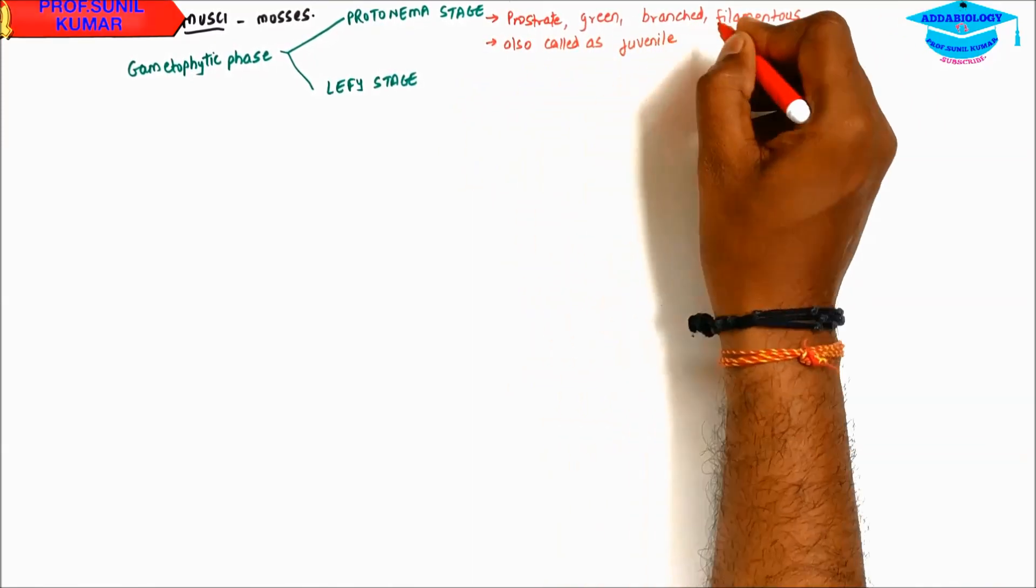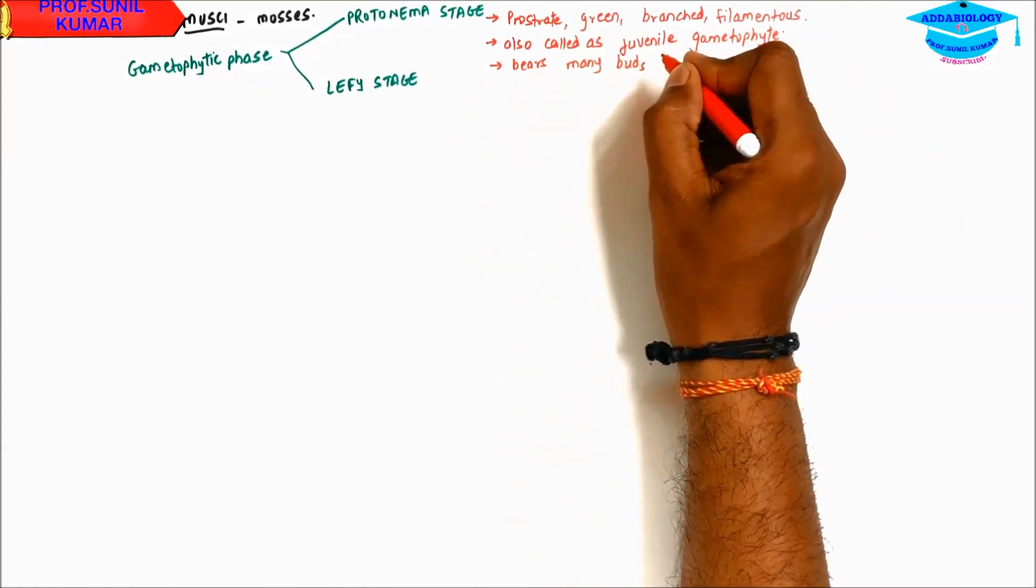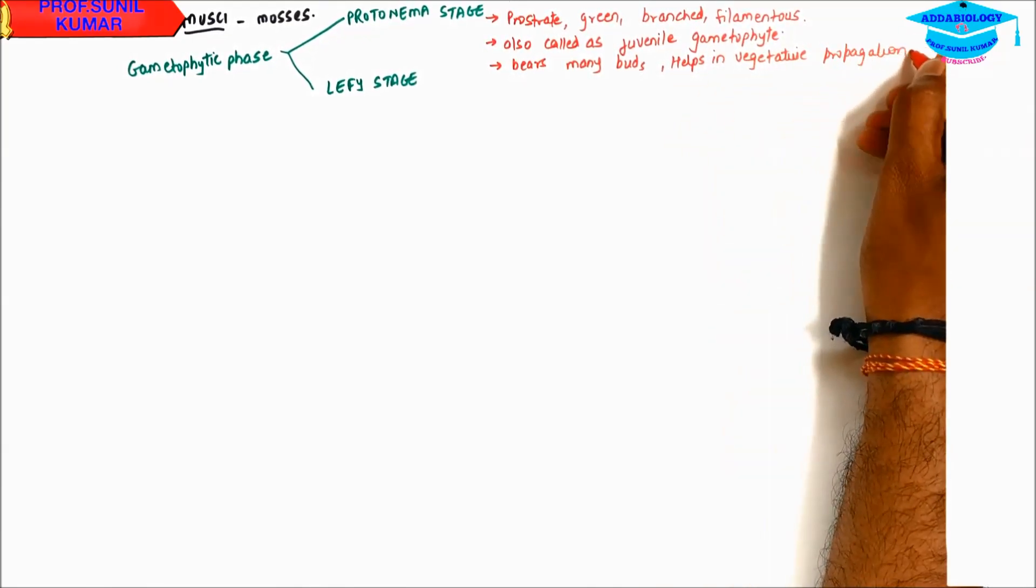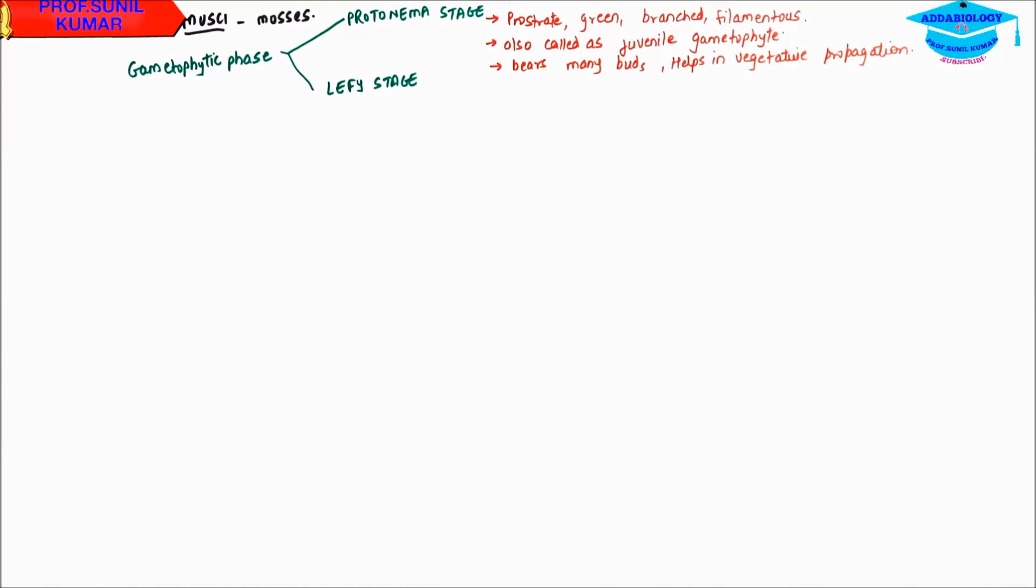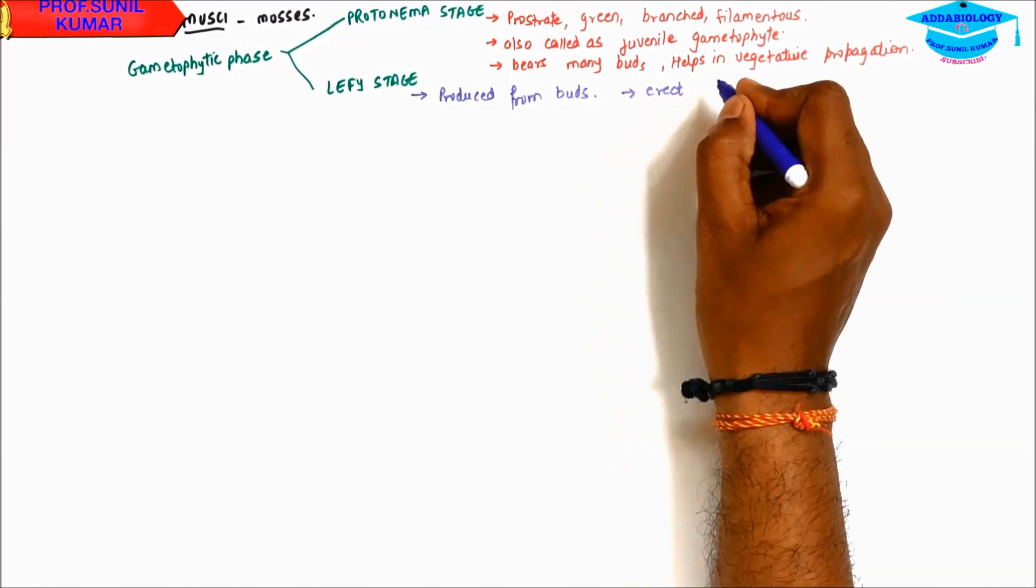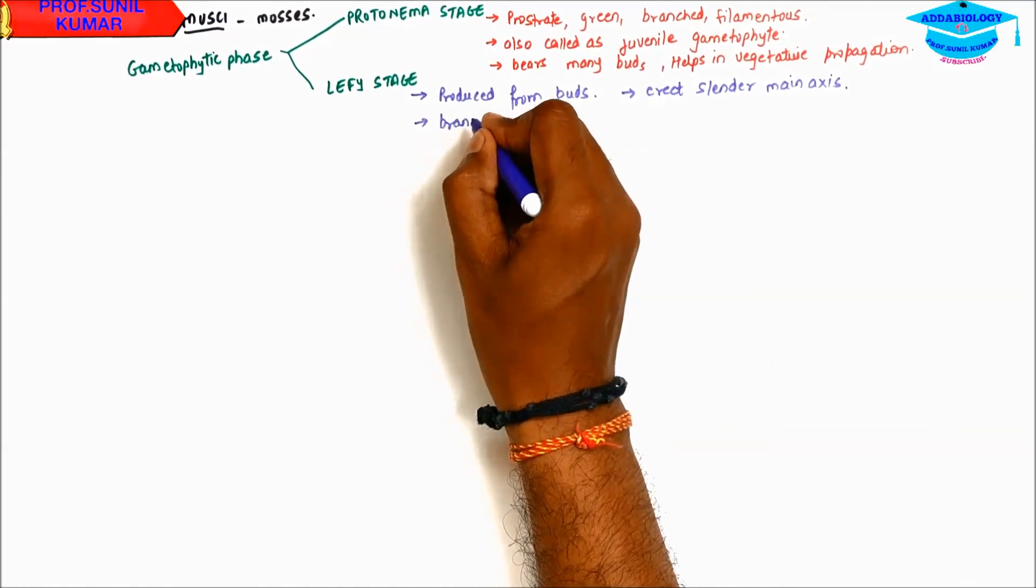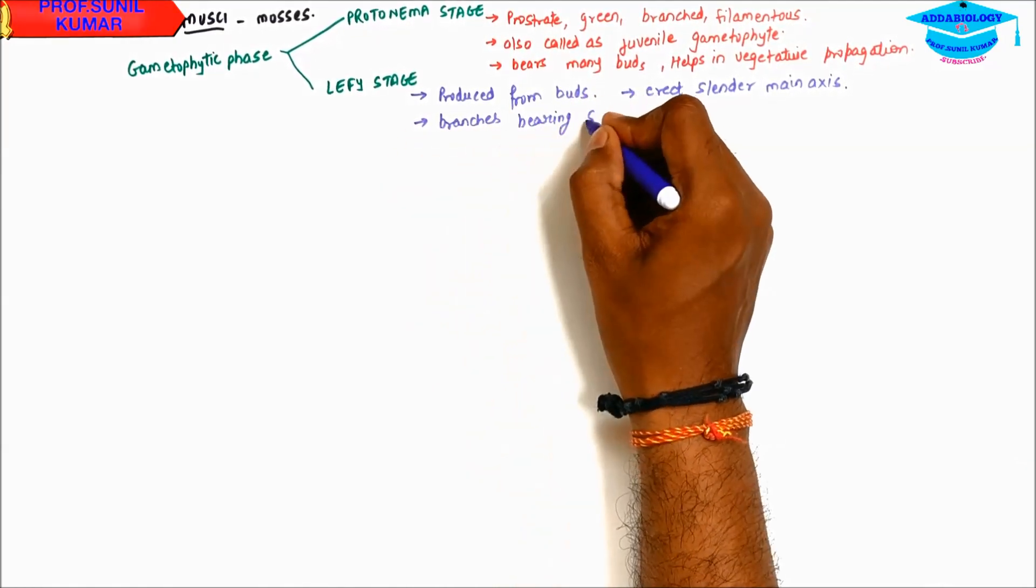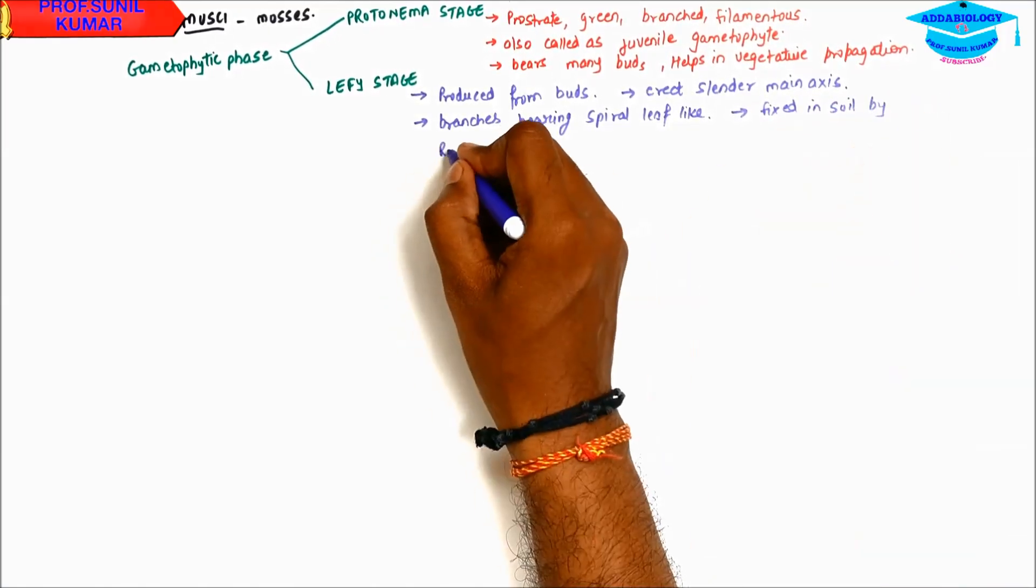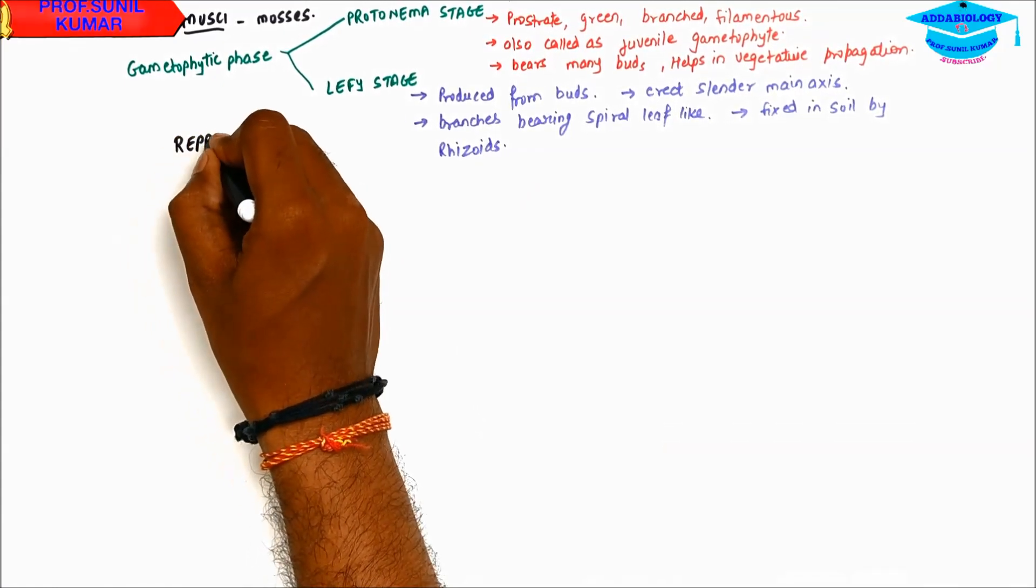When we talk about leafy stage, we need to understand that it is produced from the buds. They have erect and slender main axis. The branches, they bear spiral leaf-like structure. And leafy stage is fixed in soil by the help of rhizoids. Rhizoids do the function same like root: absorption of water and fixation to the soil.